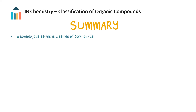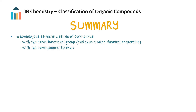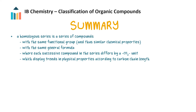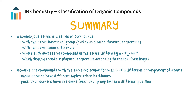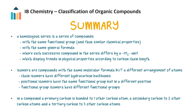Now let's summarize the main points. A homologous series is a series of compounds with the same functional group and thus similar chemical properties, the same general formula, but where each successive compound in the series differs by a CH₂ unit. Compounds in a homologous series display trends in physical properties according to carbon chain length. Isomers are compounds with the same molecular formula but a different arrangement of atoms. Chain isomers have different hydrocarbon backbones. Positional isomers have the same functional group but in a different position. Functional group isomers have different functional groups. Finally, in a compound a primary carbon is bonded to one other carbon atom, a secondary carbon to two other carbon atoms, and a tertiary carbon to three other carbon atoms.